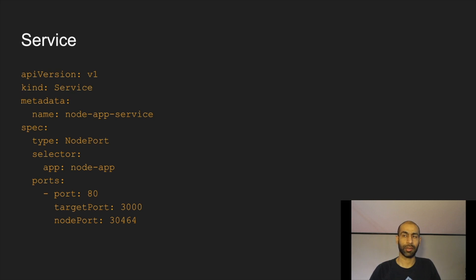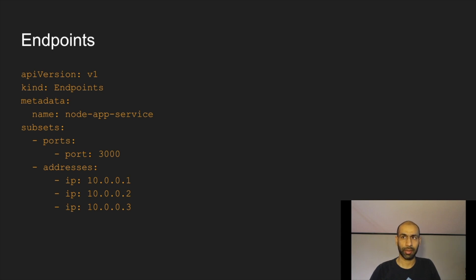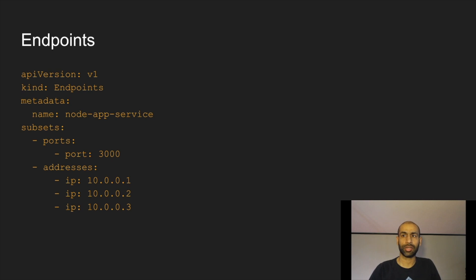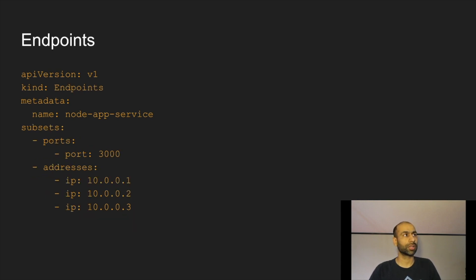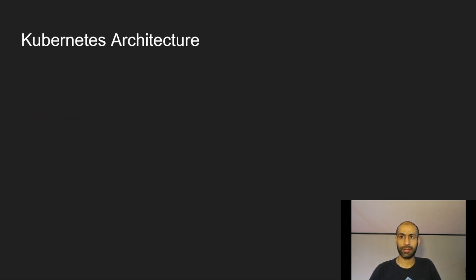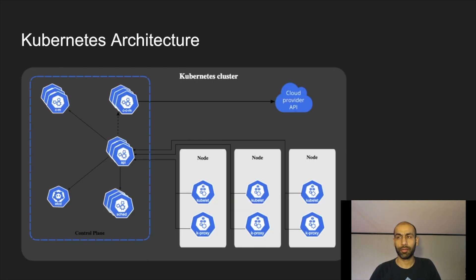As mentioned, when we create a service an endpoint object is created along with it. When you list the endpoints you will see a mapping — if there were three pods running that matched the selector, the endpoint keeps track of those pods. The endpoint object holds the real mapping of which pods the service maps to, along with port information. So the service only declares the selector, but the real information about which pods are selected lives in the endpoints object.